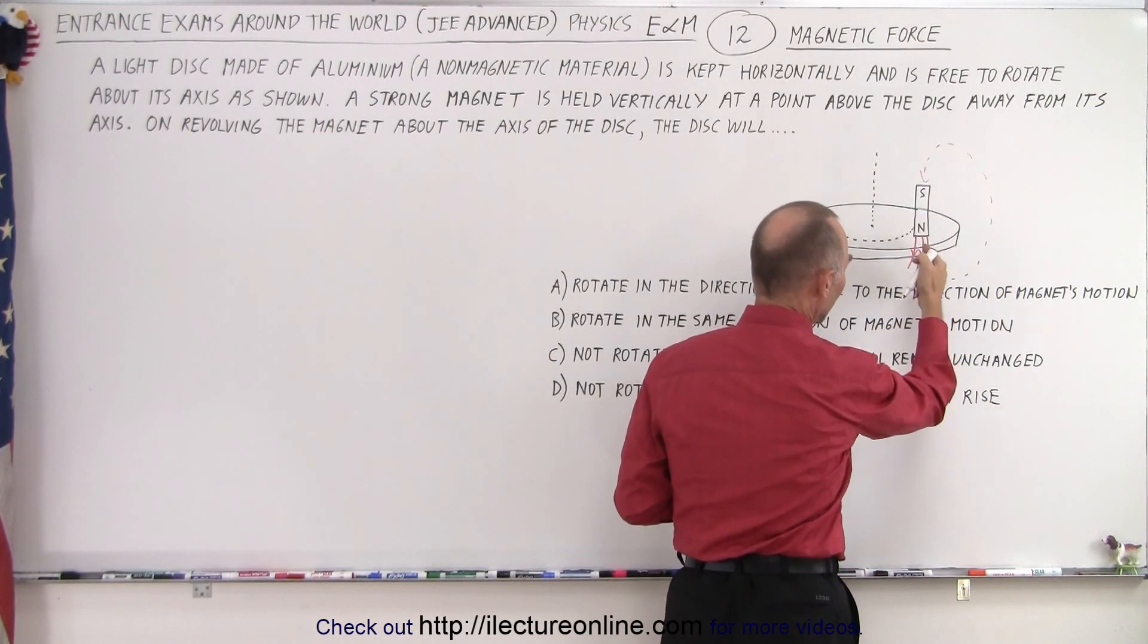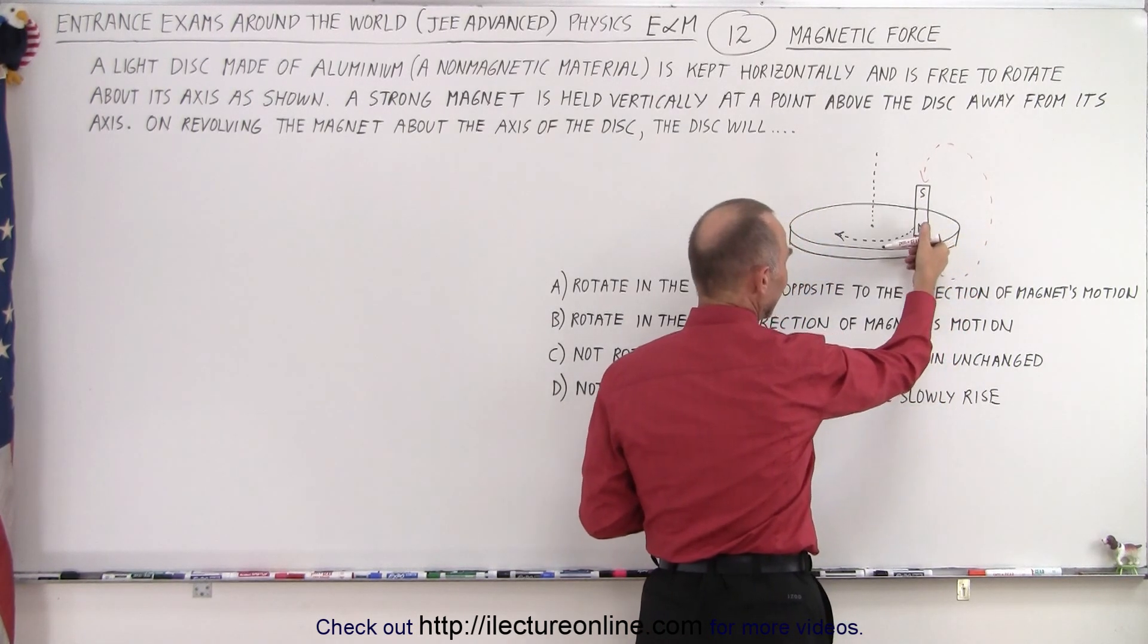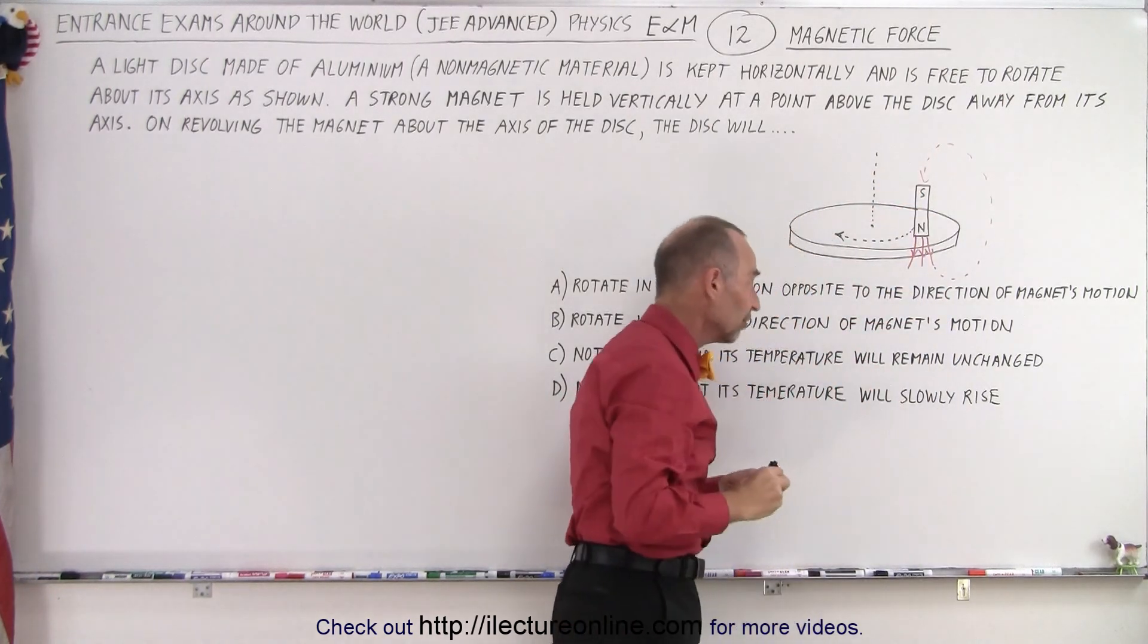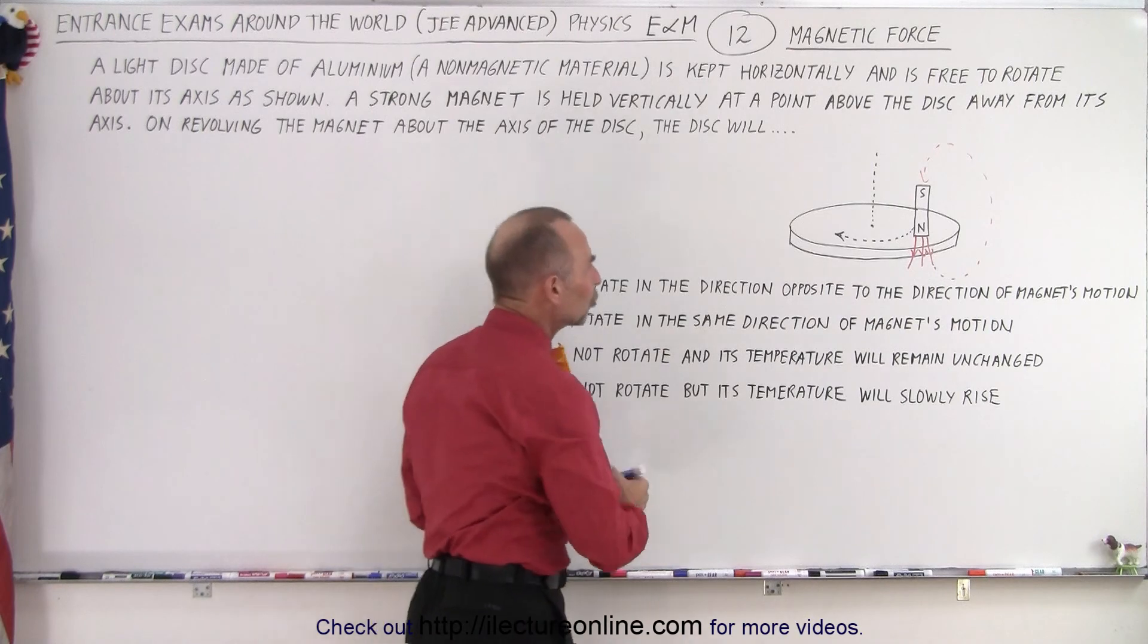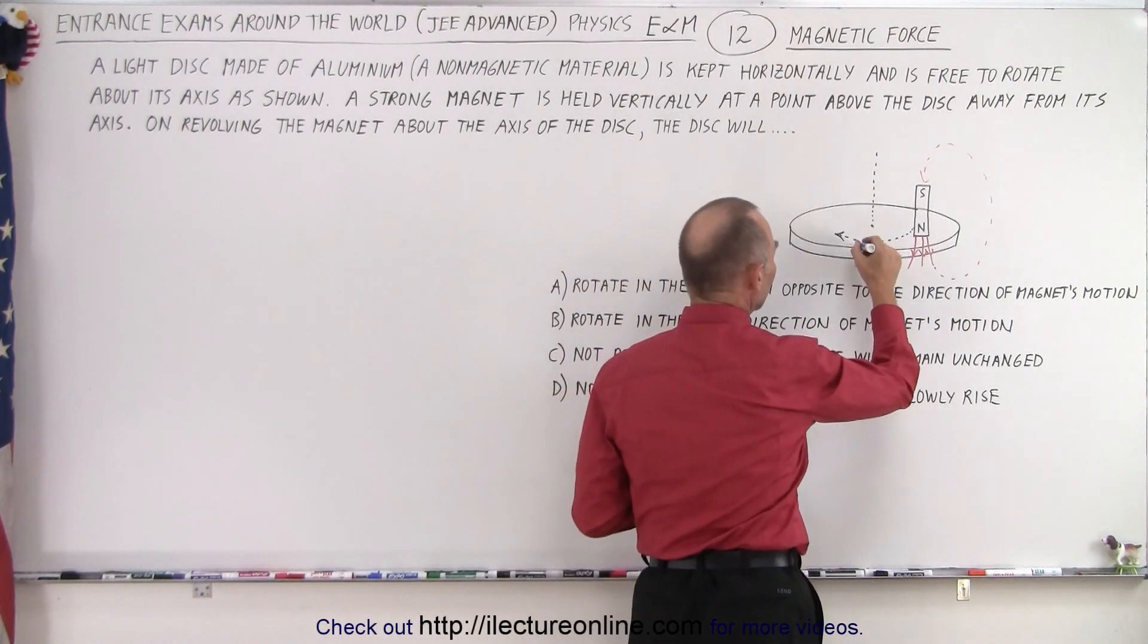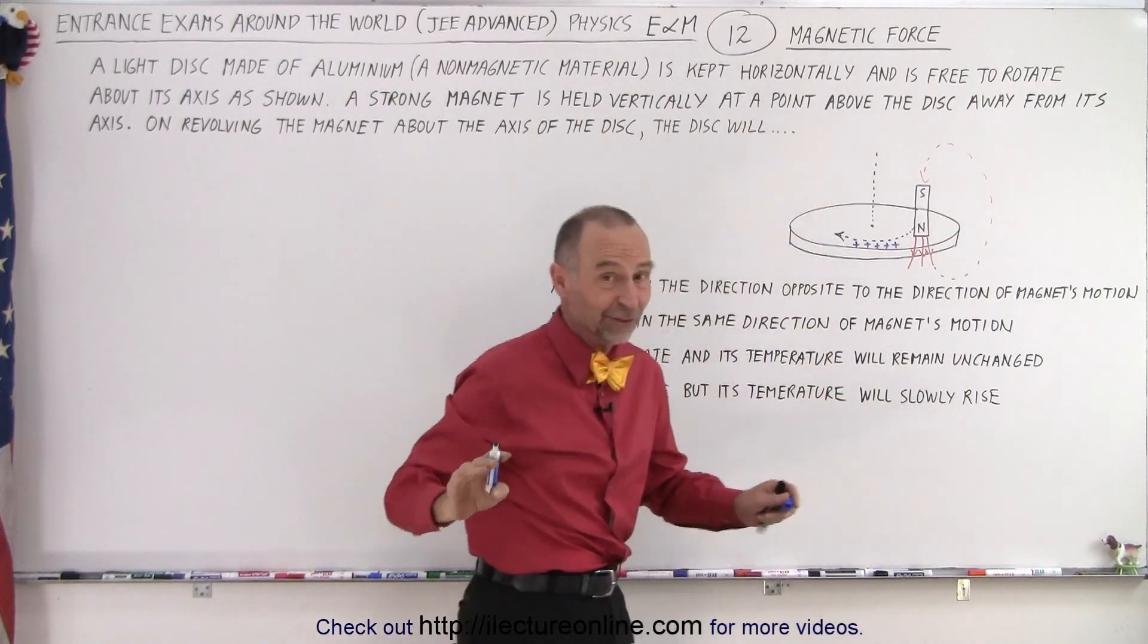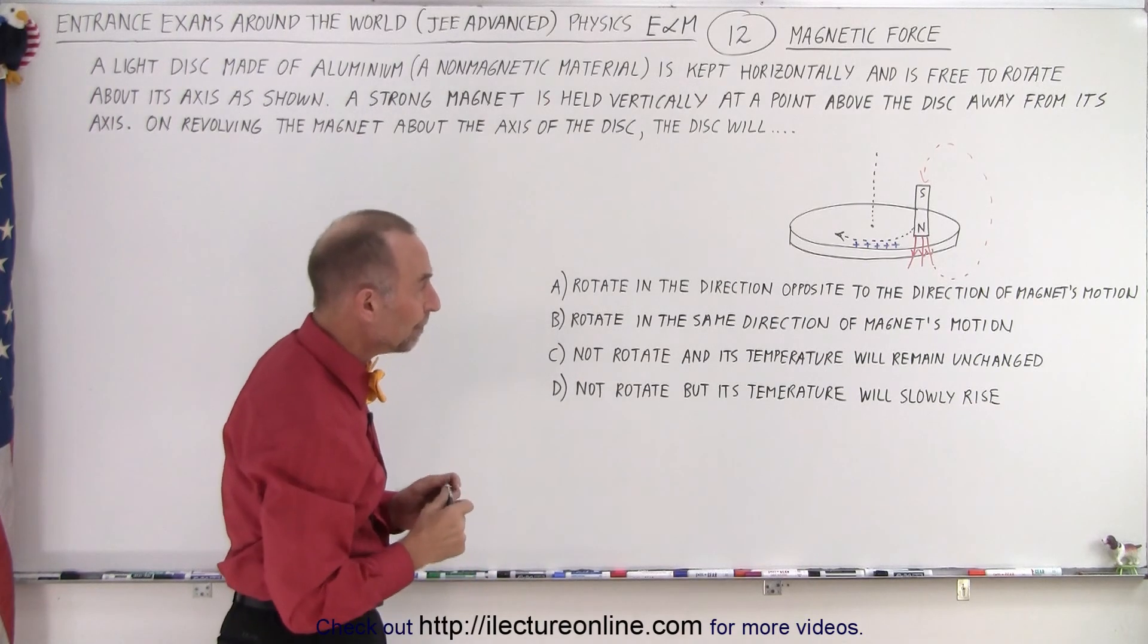So I looked at this portion right here and now imagine that this magnetic field is traveling in this direction, so it would be clockwise direction when we look from the top. And so we can then also assume that there's charges inside the disc that are free to move. And let's just call them positive charges, of course we know it's really negative charges, but let's just call them positive charges in the traditional sense of E&M.